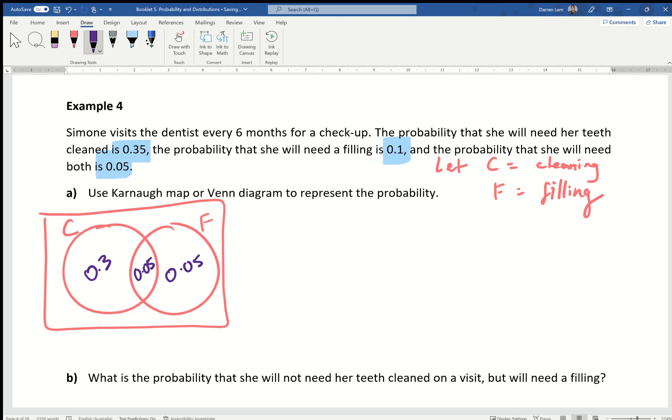Am I done with this Venn diagram? Absolutely not. Everything should add up to one in terms of probability. In this case it doesn't. If you added up 0.05, 0.05, plus 0.05, plus 0.3, that's 0.4, which means that this area has to be 0.6. So that's the area on the outside that says no cleaning, no filling.